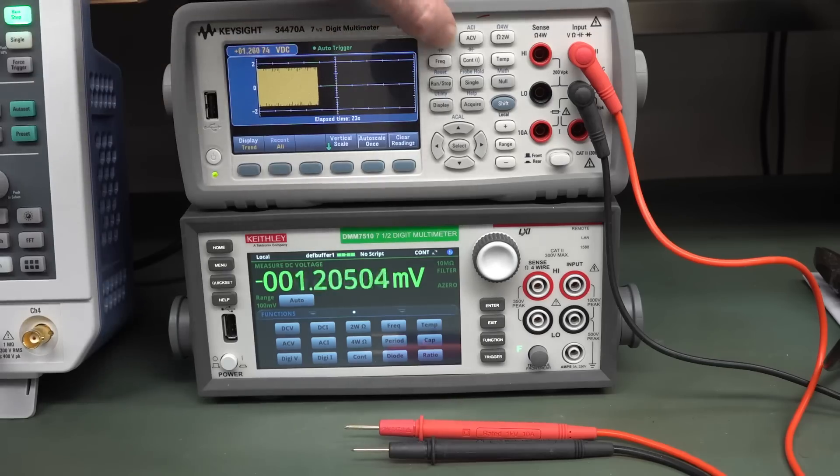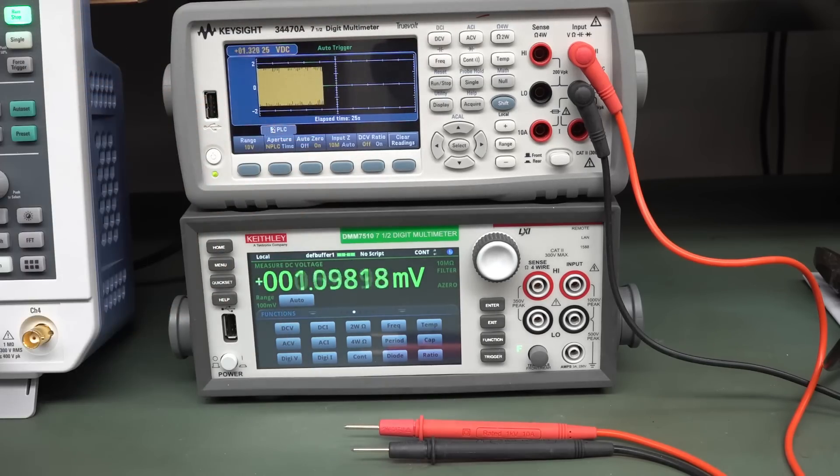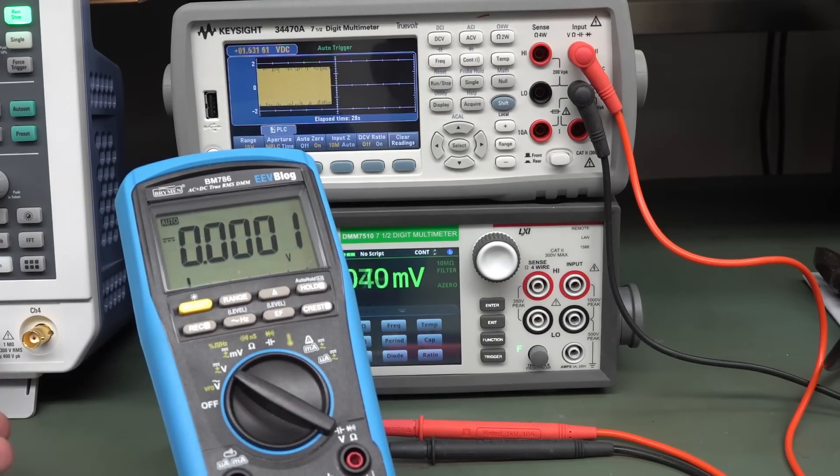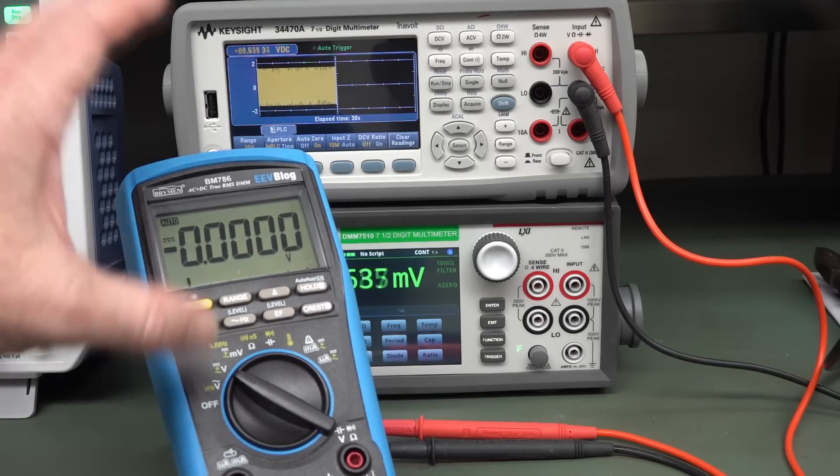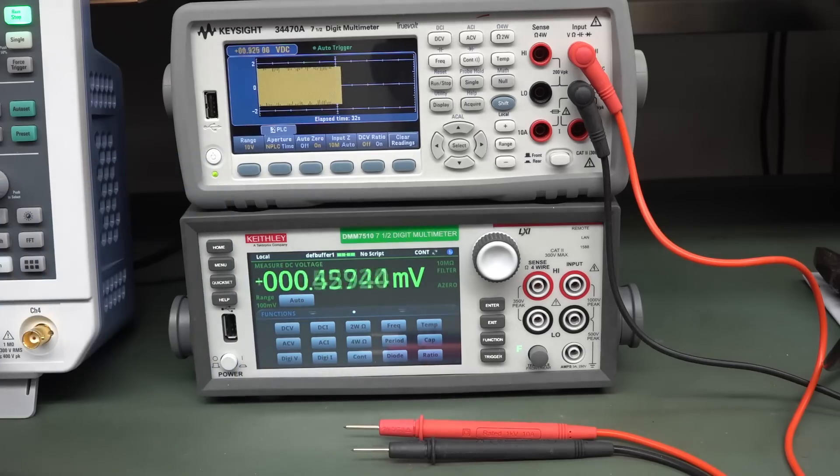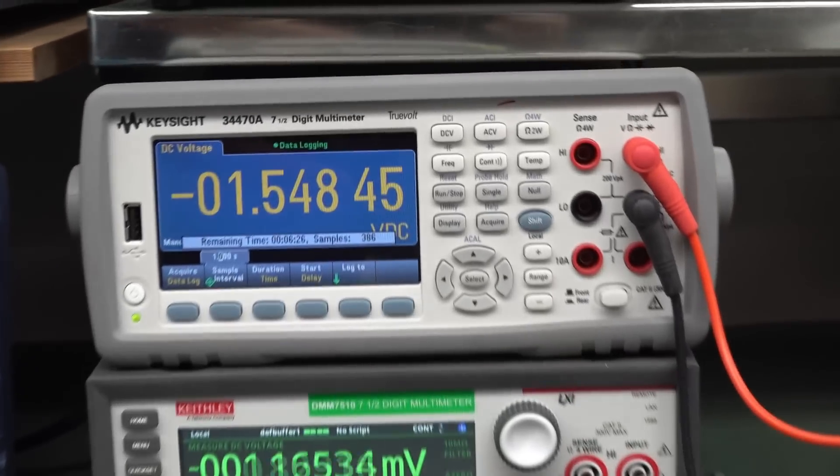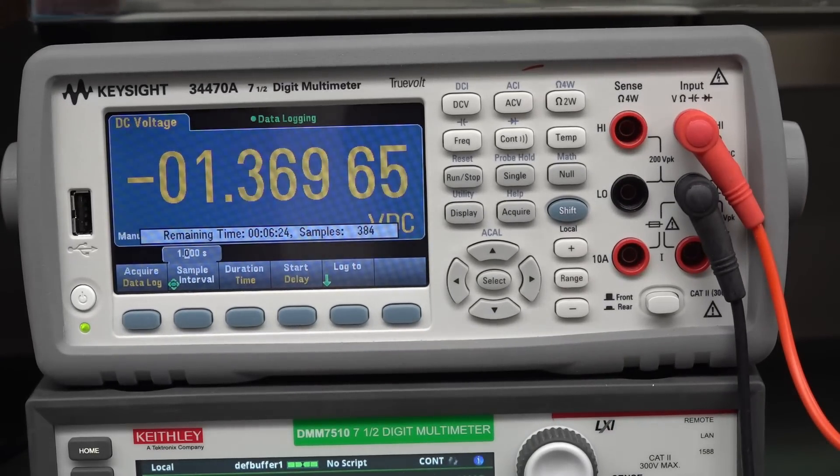Why? As I said, we've got 10 megohms input impedance, exactly the same as your regular multimeter. What's going on? Why does this show zero, and these higher end meters show a couple of volts?